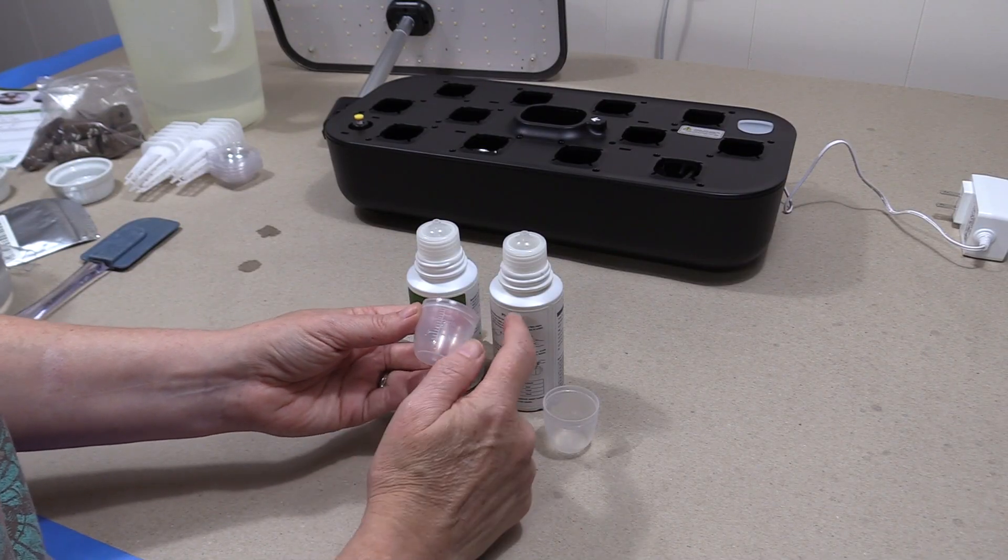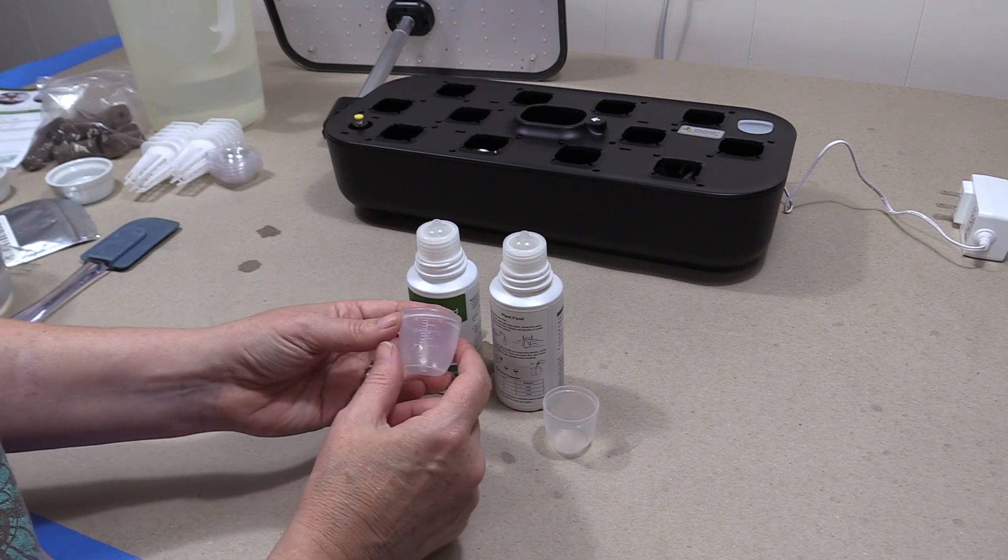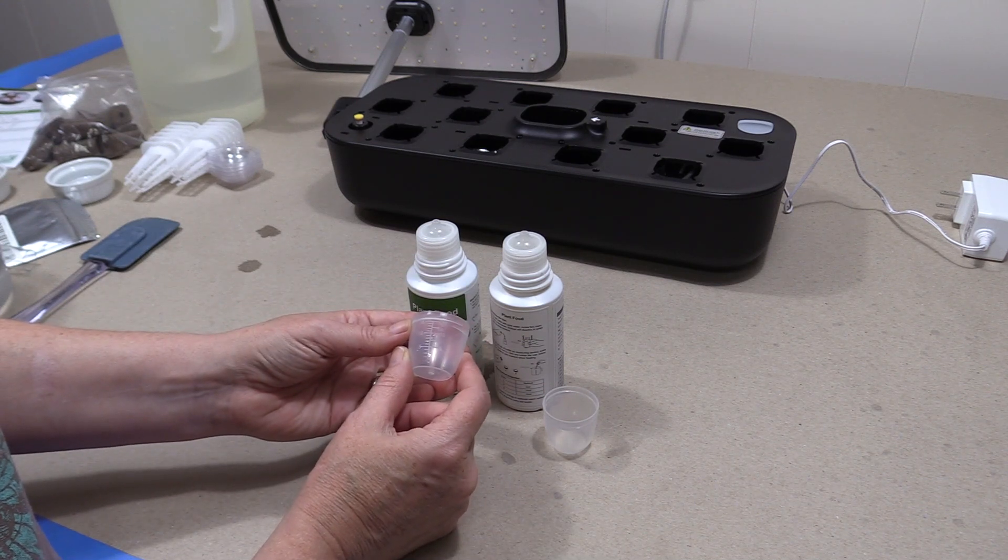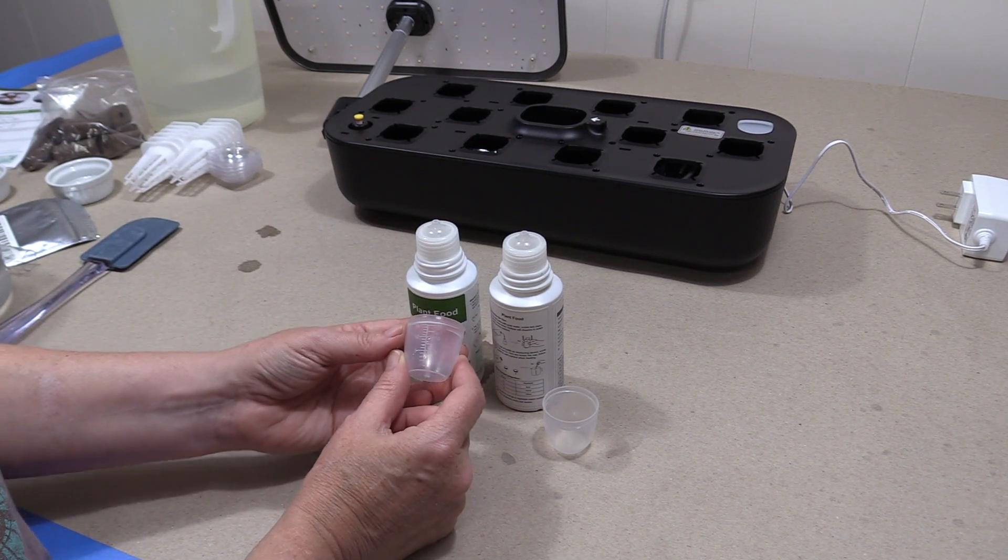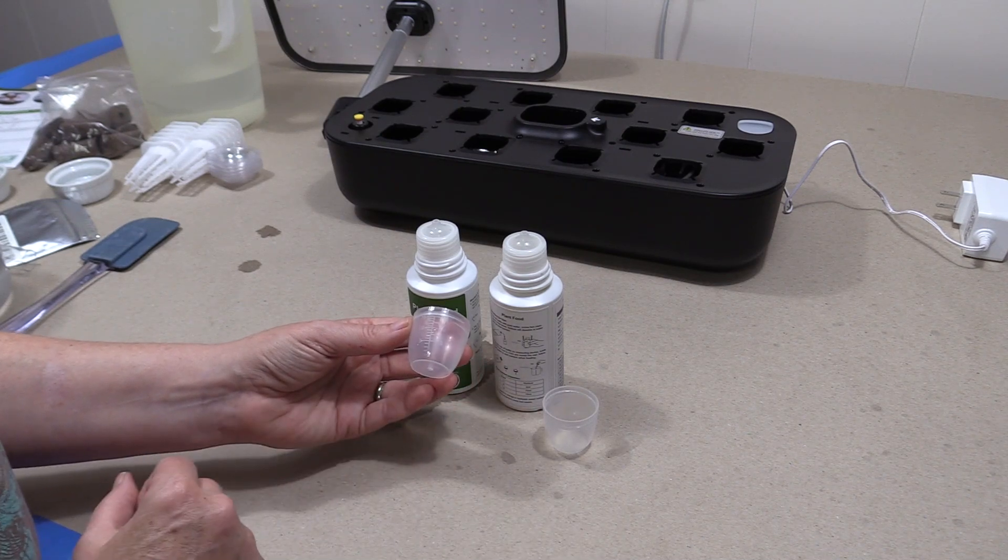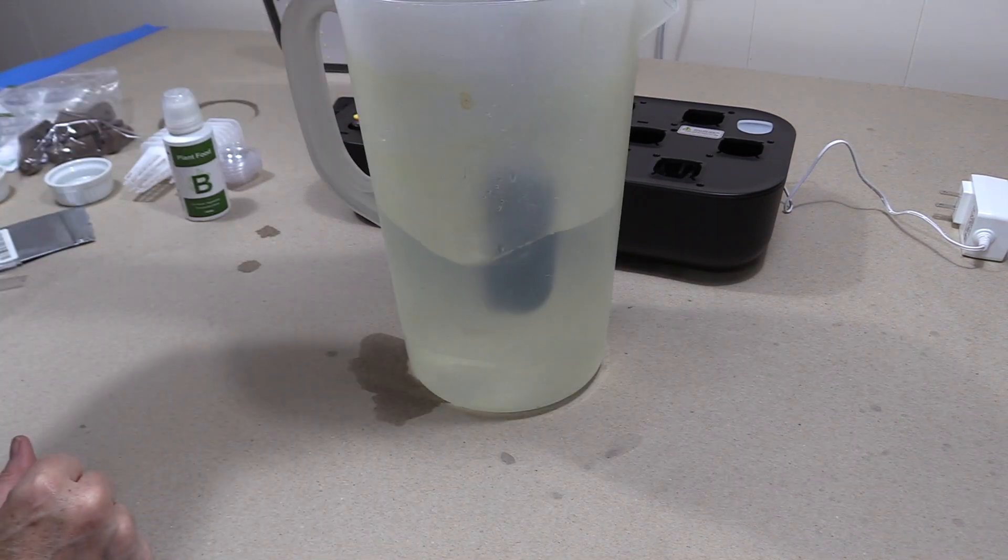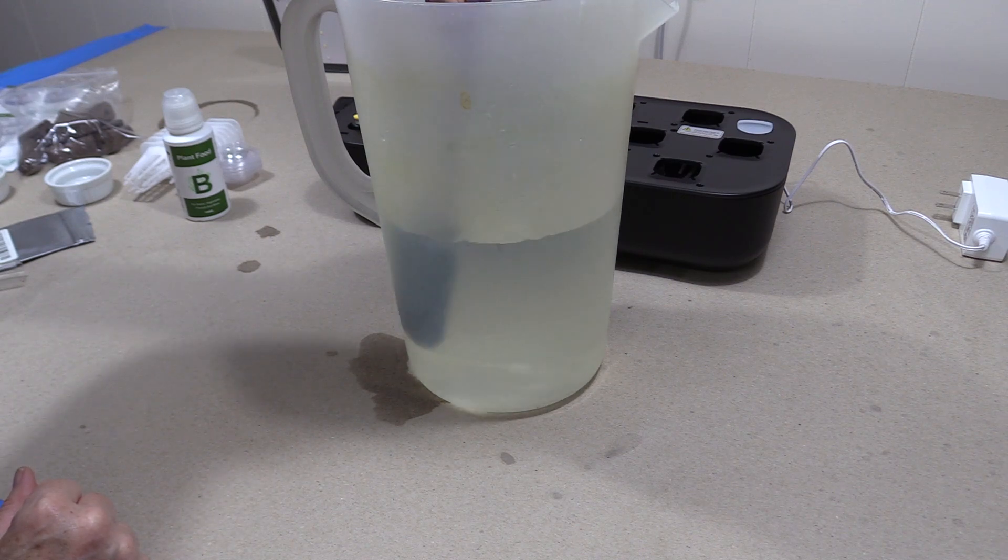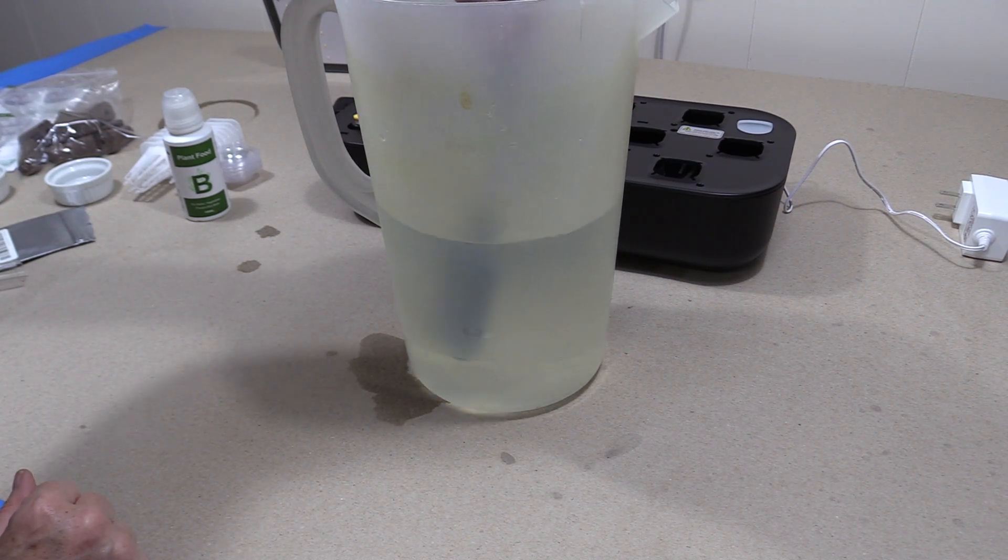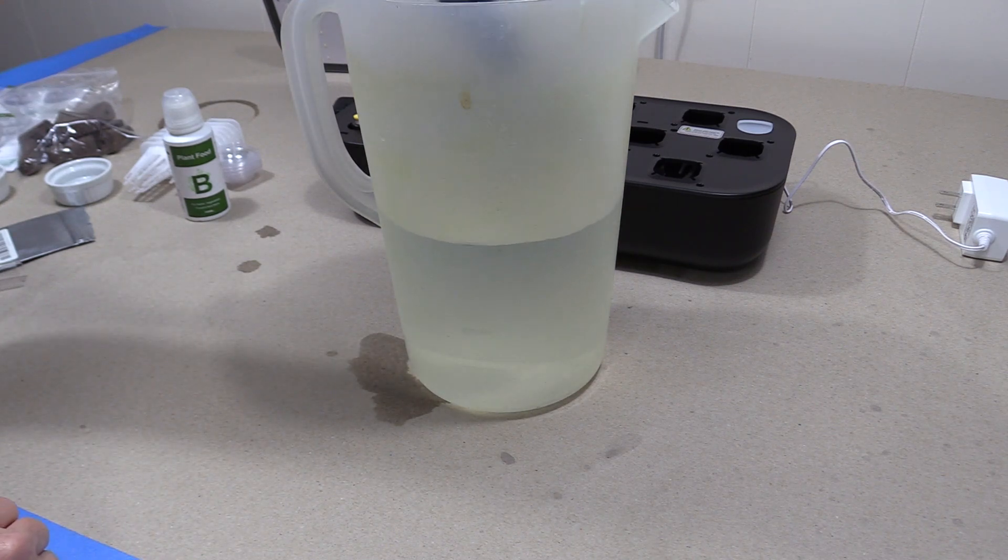And we're going to take five milliliters from bottle A and bottle B and each one is going to be mixed with one liter of plain water. If you have rainwater I would suggest using that. So now we have two liters of water that is mixed with five milliliters from A and five milliliters of B's nutrient. It's been mixed well and we're ready to get it added to our unit.